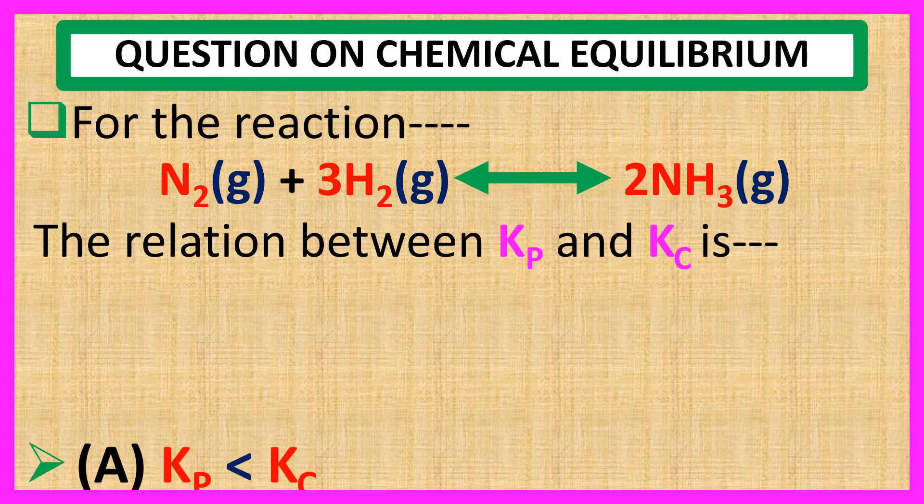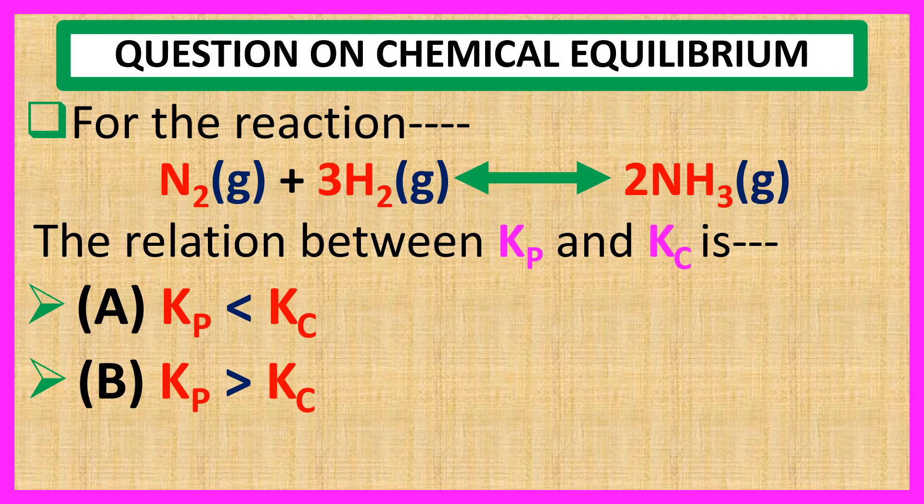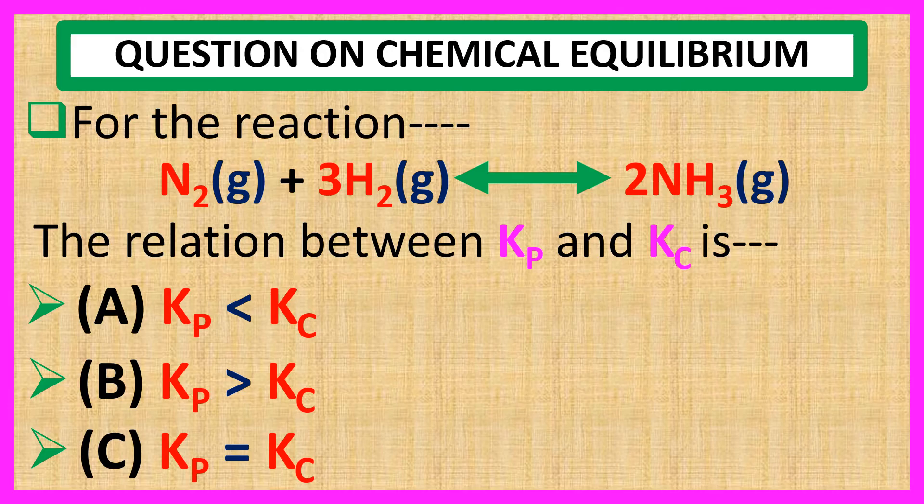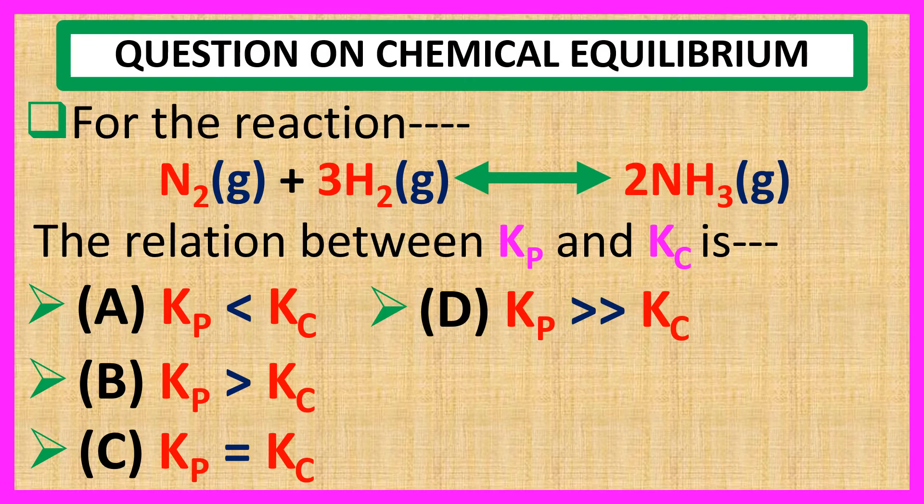Choices are A, Kp less than Kc; B, Kp greater than Kc; C, Kp is equal to Kc; and D, Kp greater than Kc.